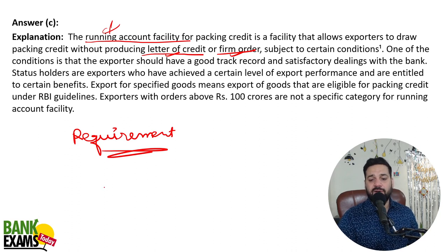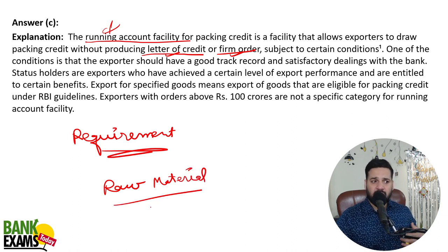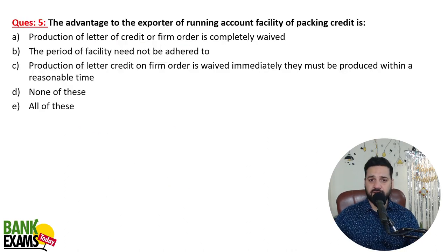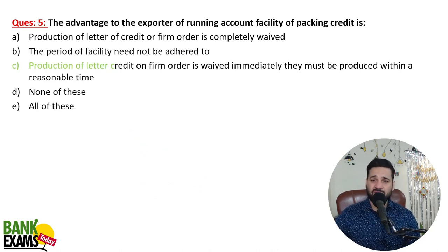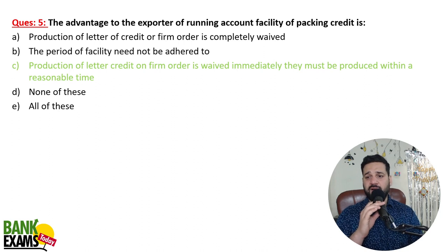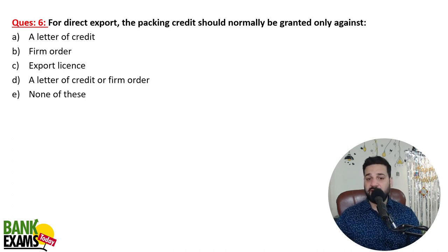Running account facility is useful when you need to buy raw material that is seasonal in nature. For example, cotton — you may buy it in April even though you need it in November. For direct export, packing credit should normally be granted only against a letter of credit, export order, or a firm order. The advantage to the exporter under running account facility is that the production of a letter of credit or export order is not immediately required, but must be shown within a reasonable time.